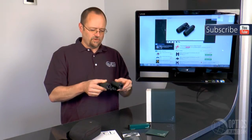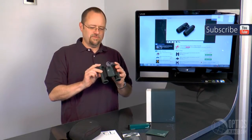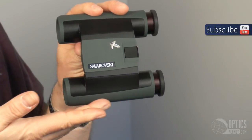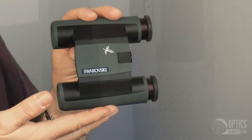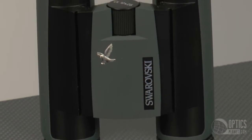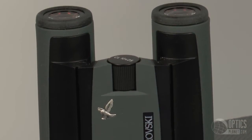These are nitrogen filled. There's a total of 20 optic elements in this. This is a Rift Prism design. It's a much smaller design than you typically see in a Poro Prism which lends these to the pocket size.